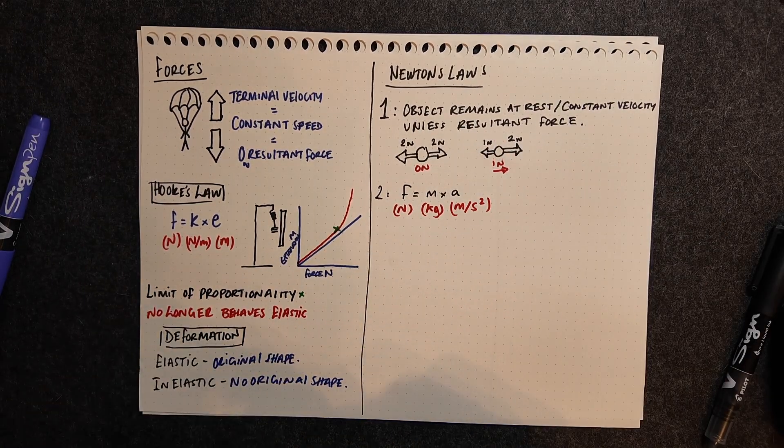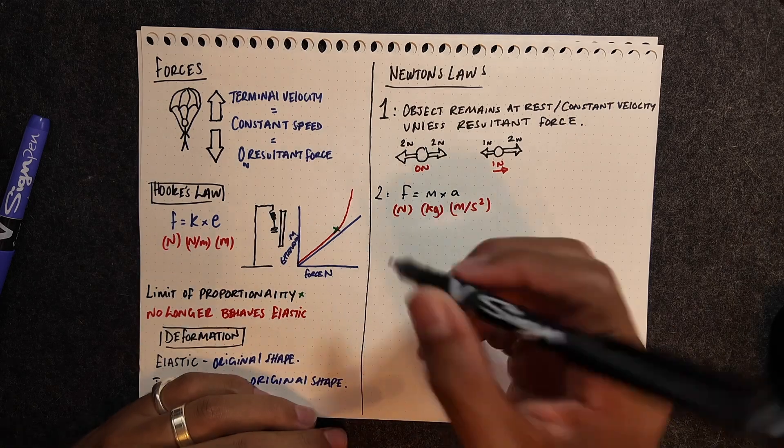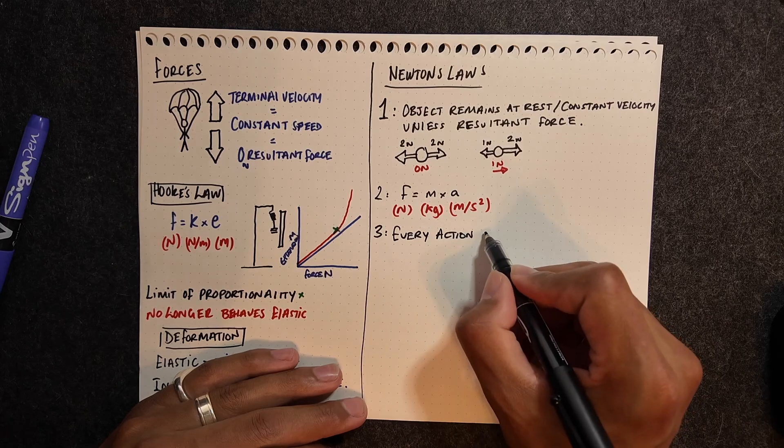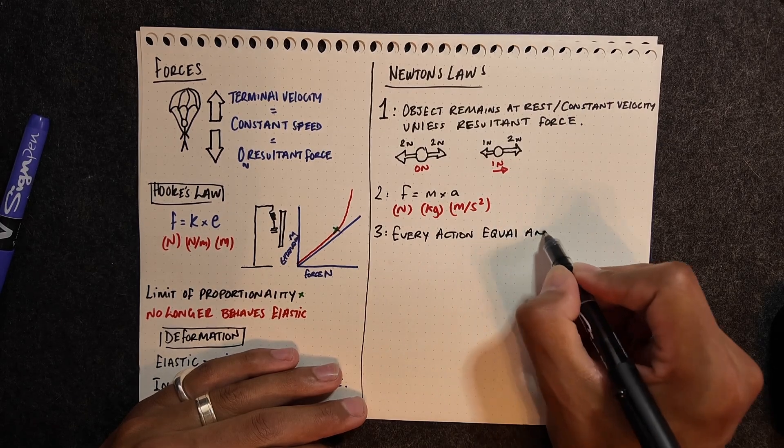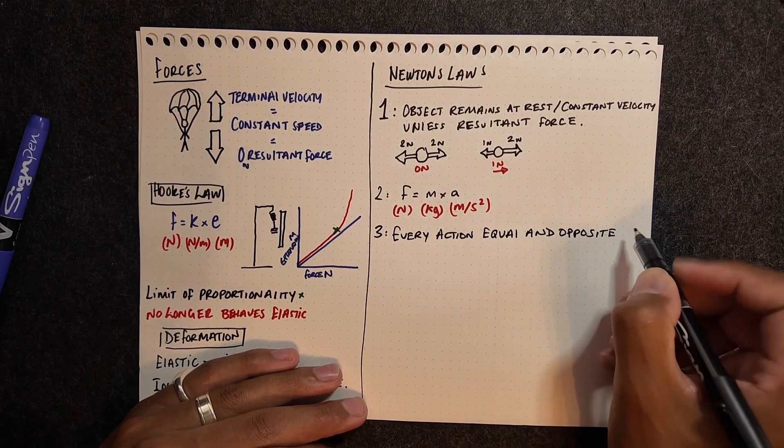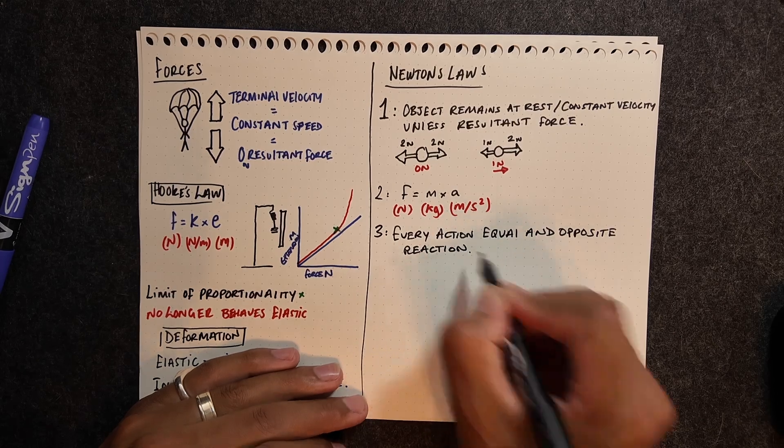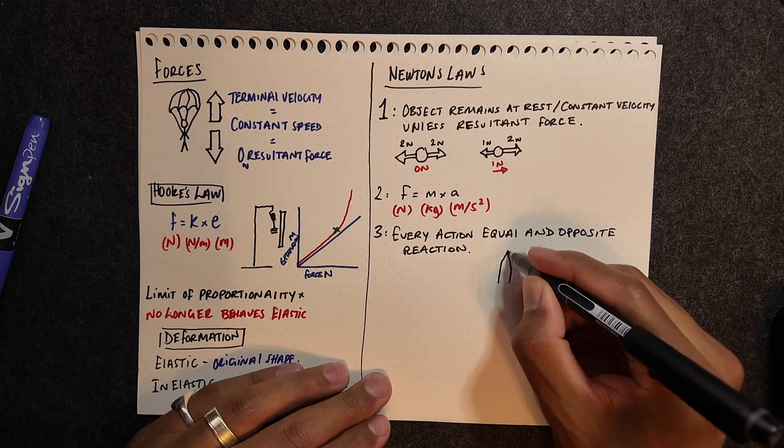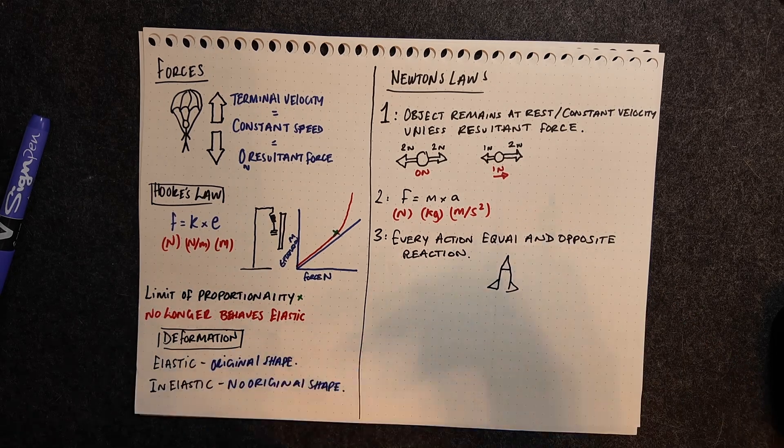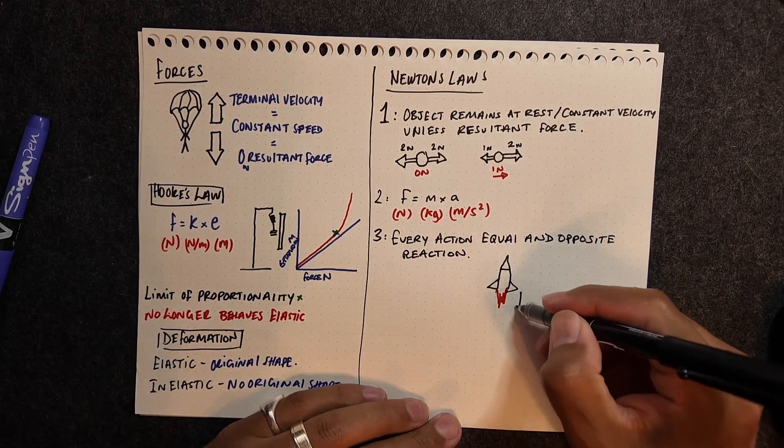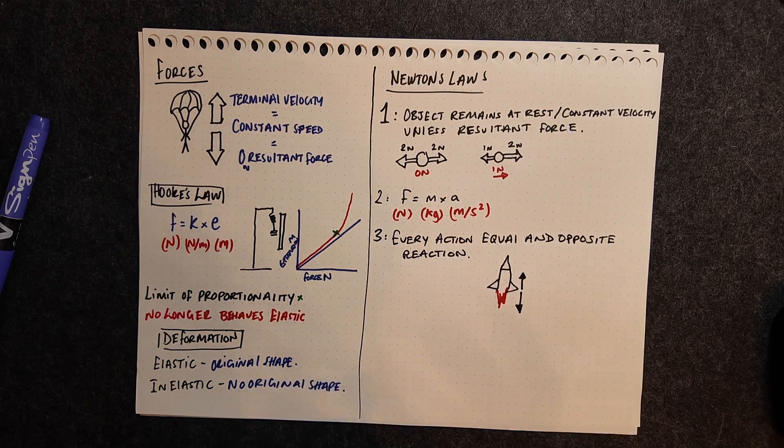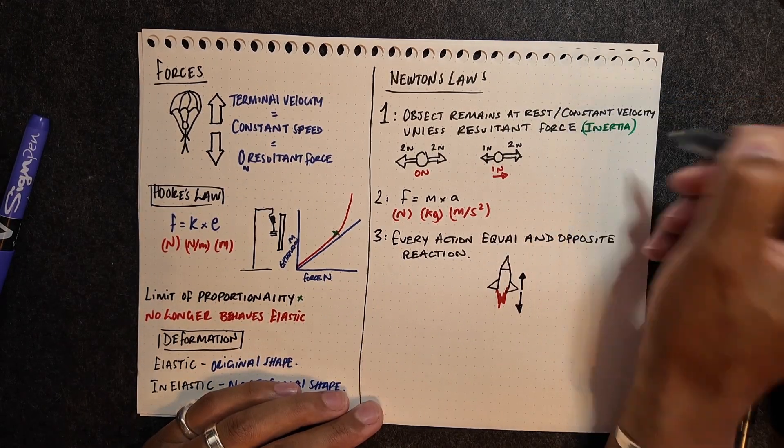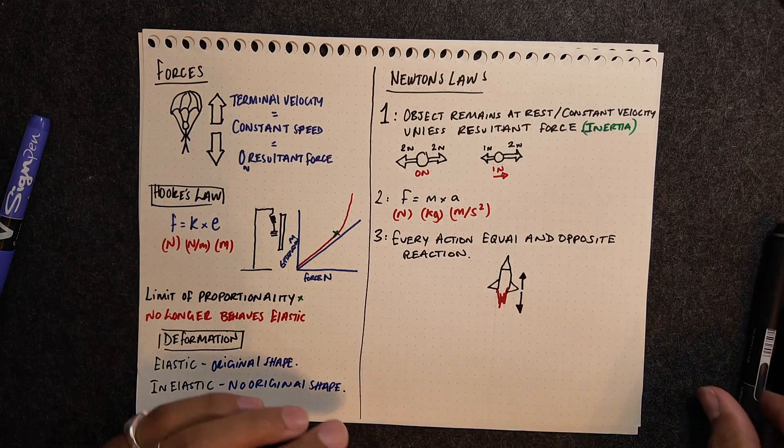Newton's second law is just F equals MA. It explains the relationship between force, mass, and acceleration. Basically, bigger force, more acceleration. And then for Newton's third law, we've got every action has an equal and opposite reaction. So the example here could be a rocket taking off. As the rocket is pushing, forcing gas downwards, there is an equal and opposite force pushing that rocket upwards. And that is what makes it rise through the air.